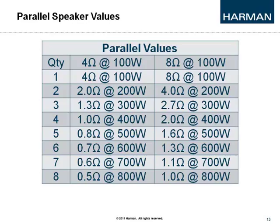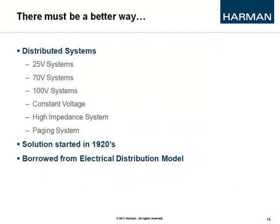There must be a better way, and there is — a distributed system, also known as a 25-volt system, 70-volt system, 100-volt system, constant voltage, high impedance system, or paging system. The differences are slight: a 25-volt system should be connected to a 25-volt source amplifier, a 100-volt system to a 100-volt source amplifier. This refers to the output voltage at the amplifier — not the wall voltage — and will be listed on the specification sheet.